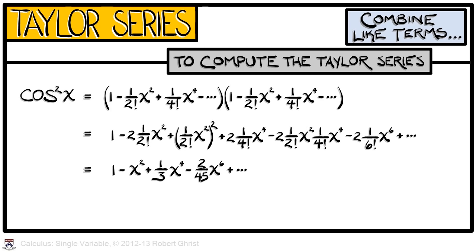One thing to note is that cosine squared of x must equal 1 minus sine squared of x. With a little simplification, we get 1 minus x squared plus x to the fourth over 3 minus x to the sixth times 2/45, etc. And from this, we obtain the Taylor Series for sine squared of x as well.